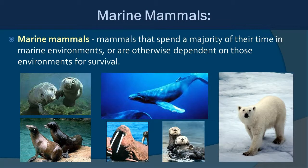Now let's get into the term 'marine mammals.' It is often misconstrued. As we've discussed with taxonomy, 'marine mammal' is not a taxonomic or phylogenetic term — it is simply a characteristic about specific mammal groups that tend to spend the majority of their time or rely on the marine environment for their survival, and they do not have to be specifically evolutionarily linked.